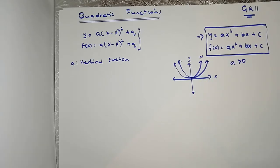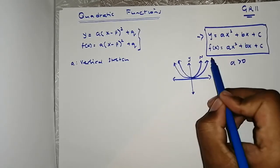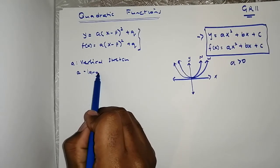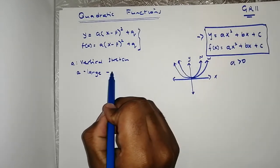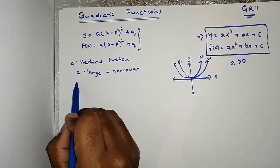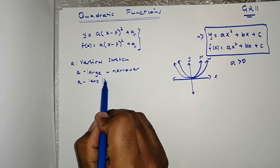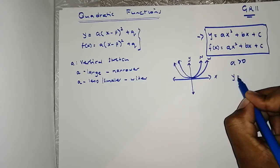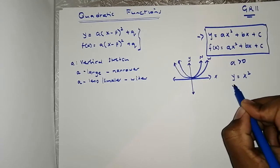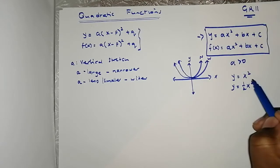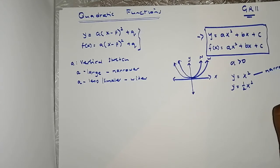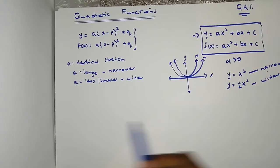The graph is going to be 'all smiles' — opening upward. If a is large, the graph will be narrower. If a is smaller, the graph will be wider. For example, y = x² has a larger 'a' than y = ½x², so y = x² will be narrower and y = ½x² will be wider when you compare both of them.